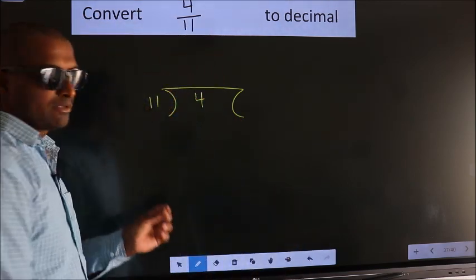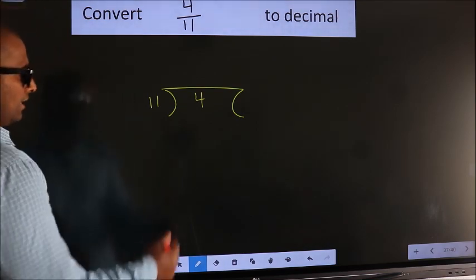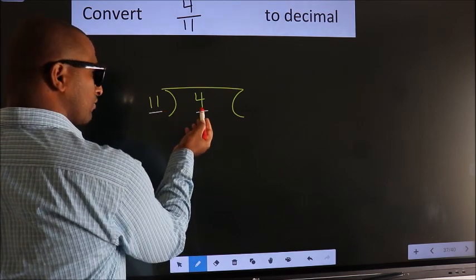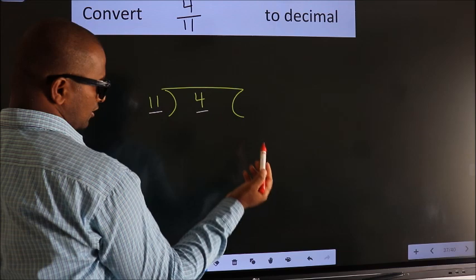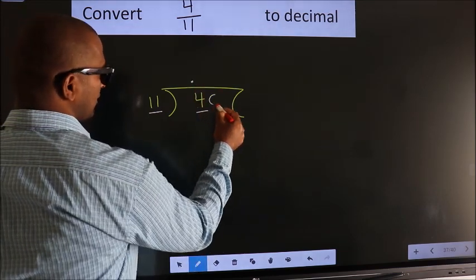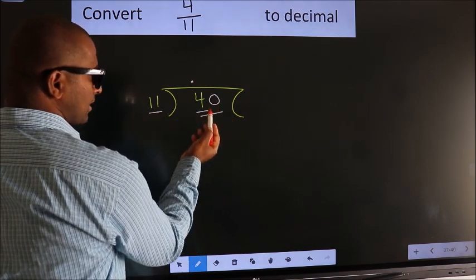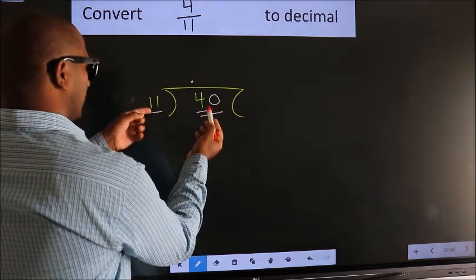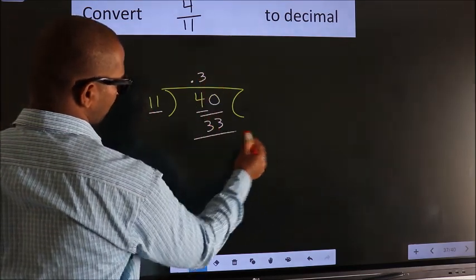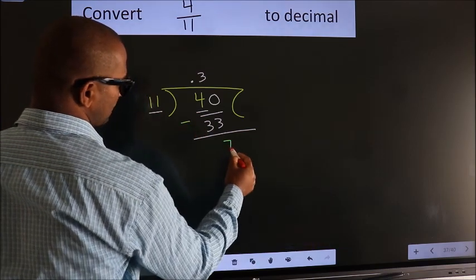This is your step 1. Next, here we have 4, here 11. 4 is smaller than 11, so what we do is we put dot, take 0 here, so 40. A number close to 40 in 11 table is 11 times 3 is 33. Now we subtract, we get 7.